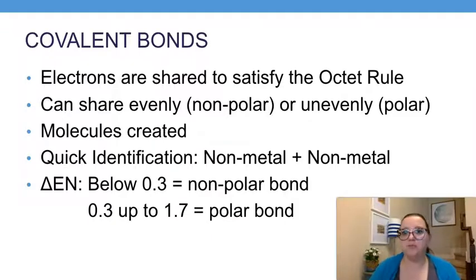With covalent bonds, we would say that a molecule gets created. Instead of that lattice structure with repeating positive and negatives, here we're going to have discrete molecules that we'll be able to draw. For a quick identification, I would be looking for only nonmetals in my compound. You could have just two elements, but you could also have more than that. If you think back to biology, you had some really big molecules with only nonmetals - things like glucose or DNA structures or carbohydrates that you drew back in biology would have been considered covalent.